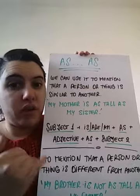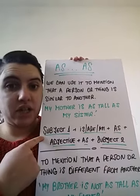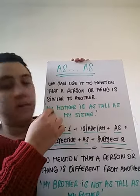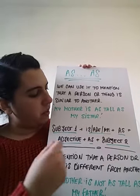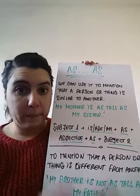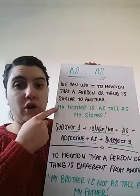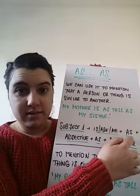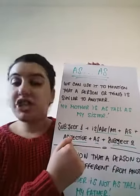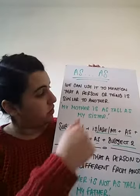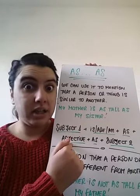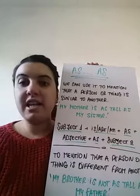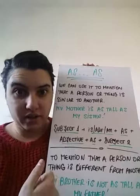The structure is the following. We're going to write the first subject — el sujeto número uno — that in this case is 'my mother'. Then we're going to write 'is', 'are', or 'am', como corresponda, dependiendo el sujeto. And then you're going to write 'as' (tan), the adjective — en este caso es 'tall', tan alta — 'as' (como), y el segundo sujeto, que en este caso es 'my sister'.